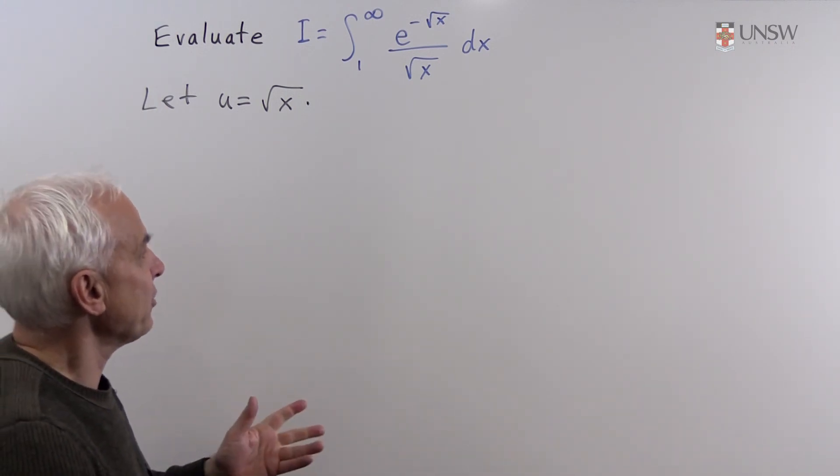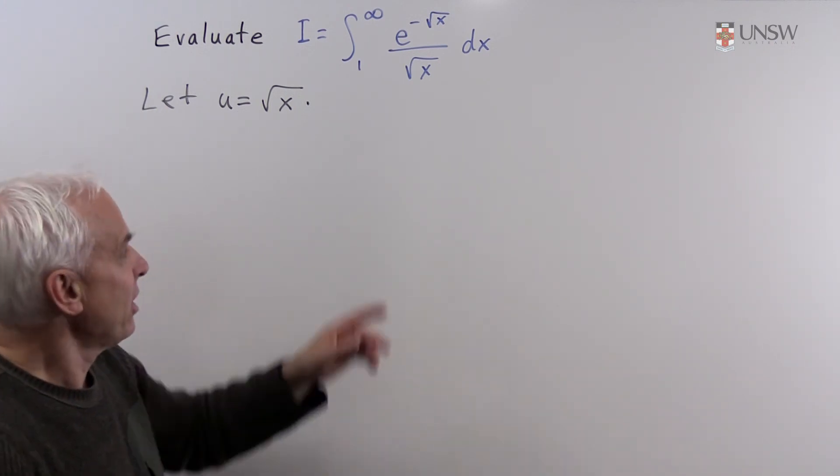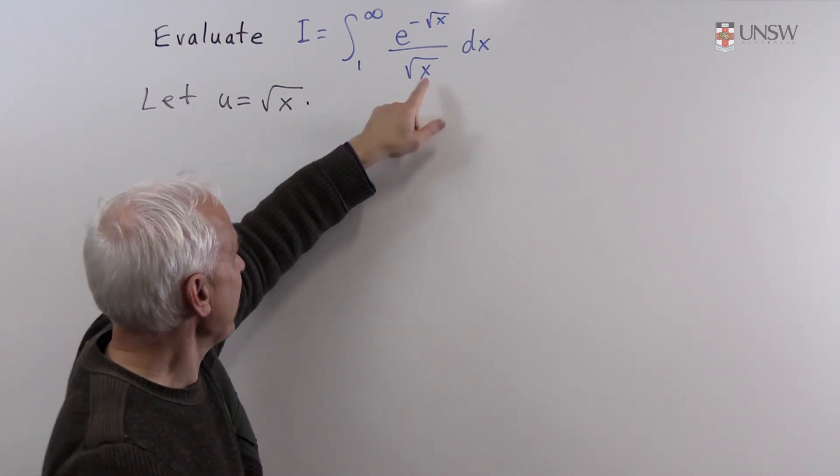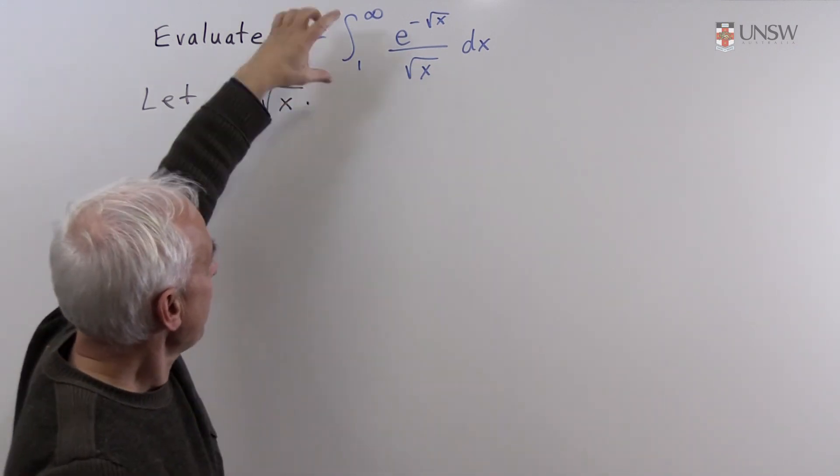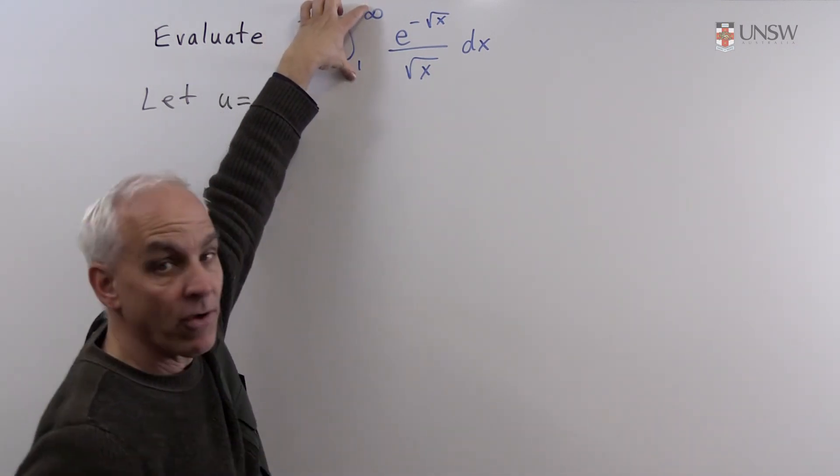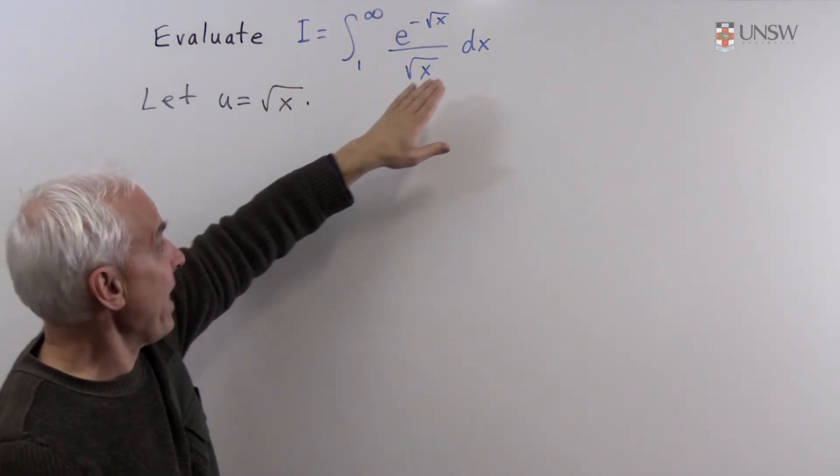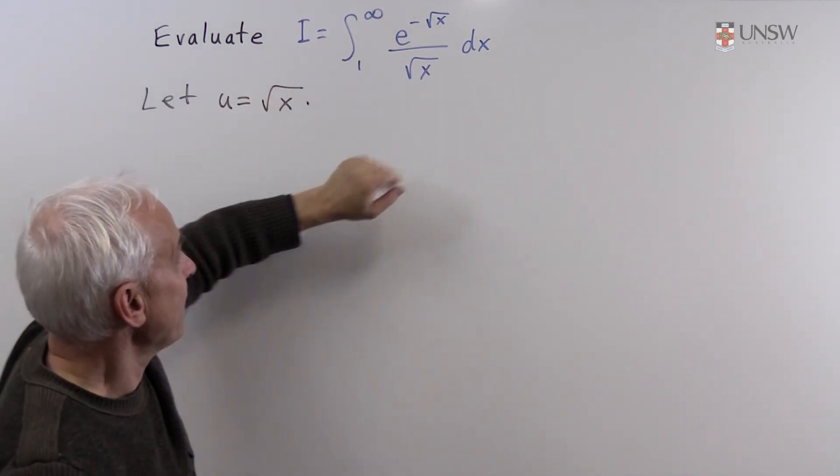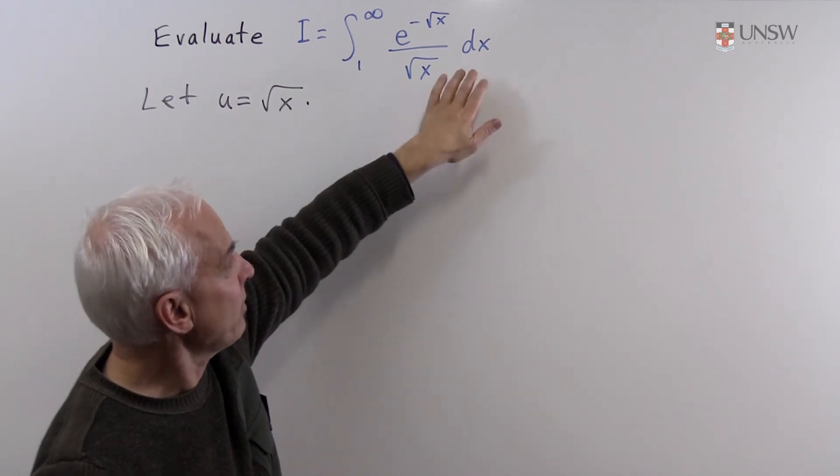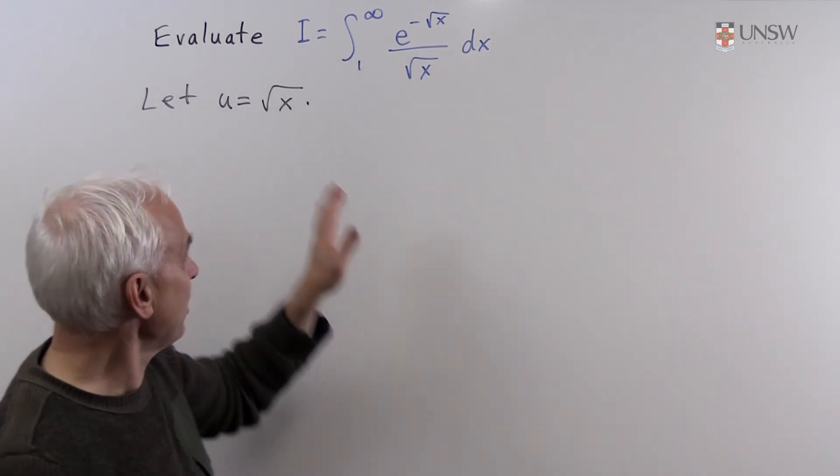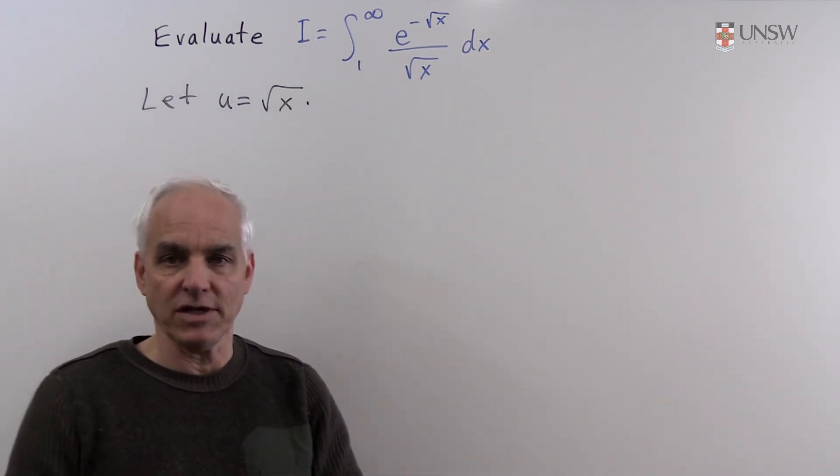There are three things that are going to happen when we make a substitution. First, the square root of x's are going to be replaced with u. Second, we're going to have to look at the bounds of integration and convert them from x bounds to u bounds. And finally we'll have to replace the dx with the appropriate expression involving du.